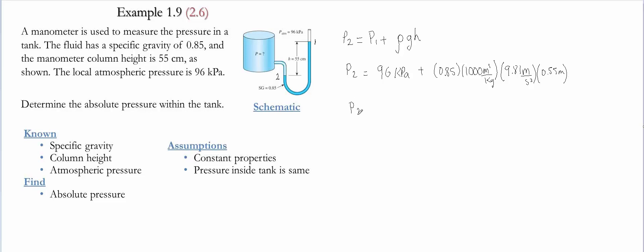Then we write P2 is 96 kilopascals. The multiplication of all these values gives you 4586.175 pascals. Please note that you cannot add these two values together. Either you need to multiply this by 1000 to make it into pascals to add it, or divide this by 1000 to convert to kilopascals.